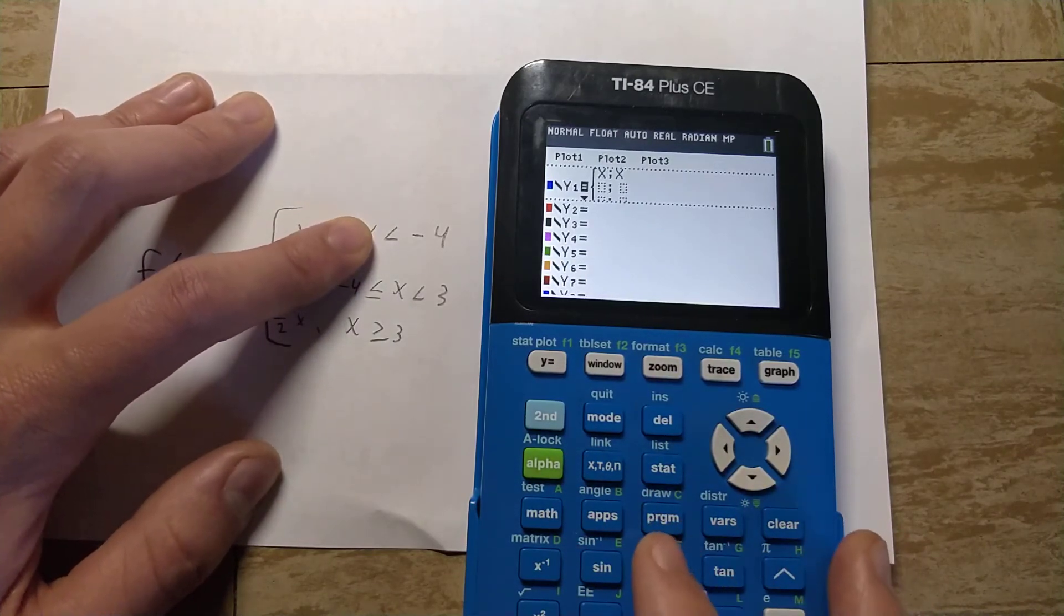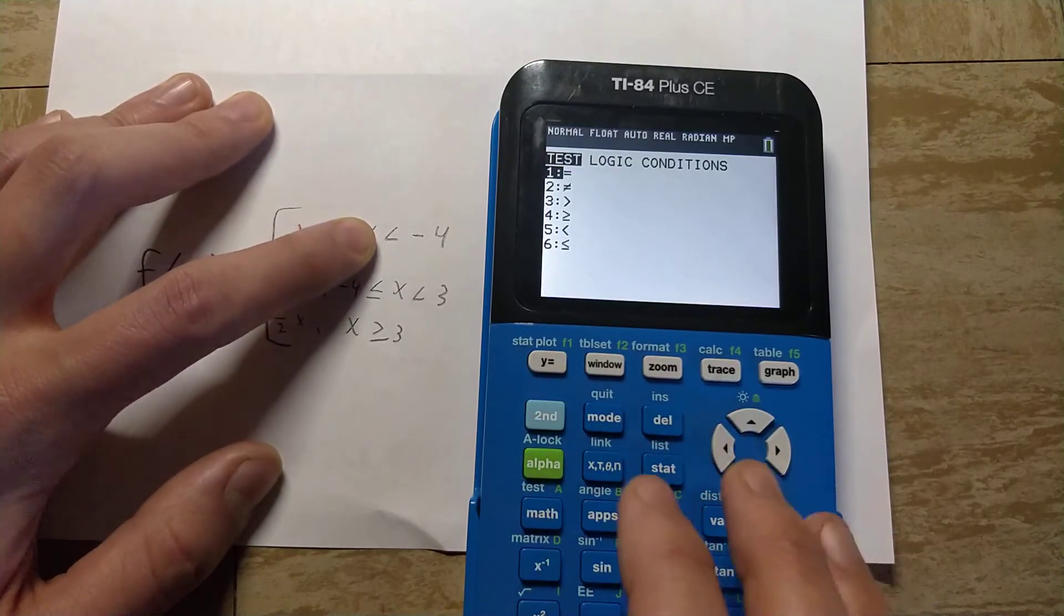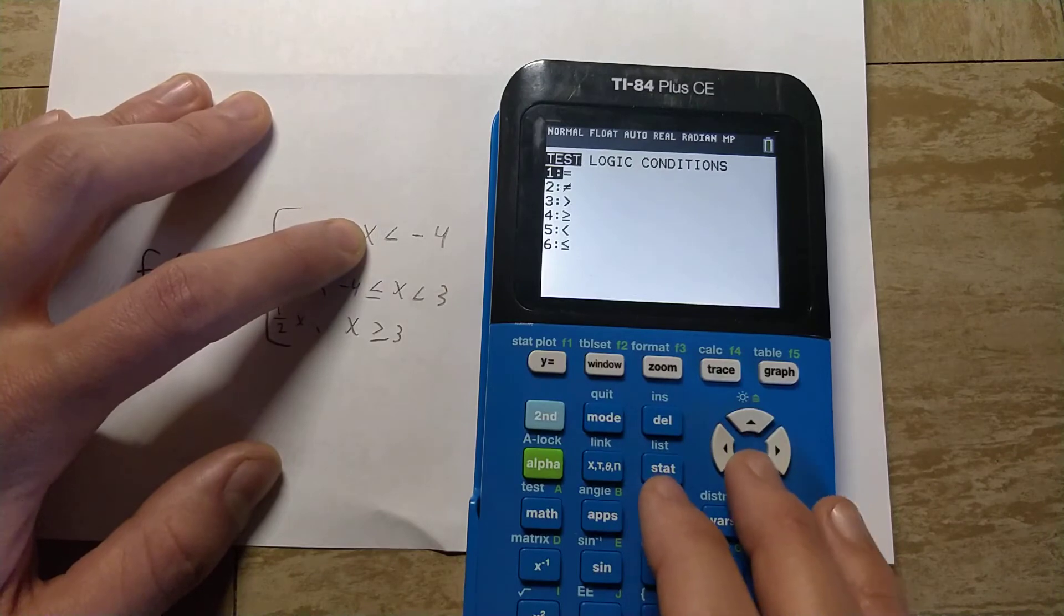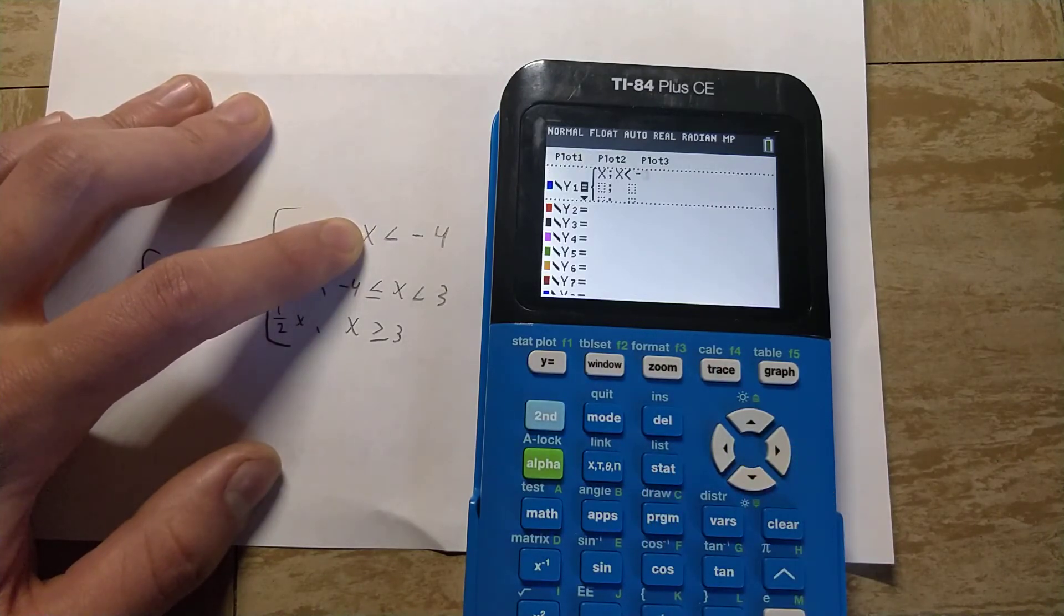Then to get to the less than, greater than buttons, we would just do second and then math, which is test here. You'll see all the options here. So for x is less than negative four, we would type it in like that.